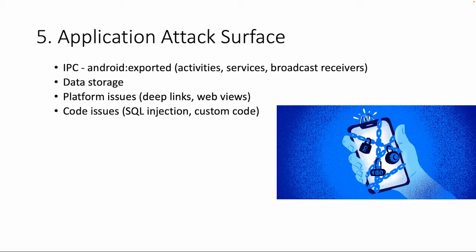One of the most important topics is the application attack surfaces. Based on the different layers of the Android operating system and different attack factors, we will teach you how to exploit them and find vulnerabilities. This covers the inter-process communication layer — mainly exported activities, services, and broadcast receivers — data storage issues, platform issues specific to Android like deep links and web views, and finally code issues.